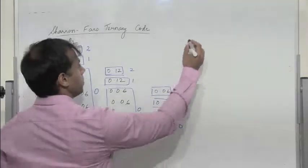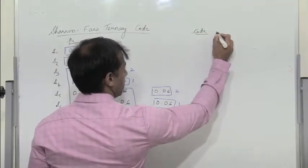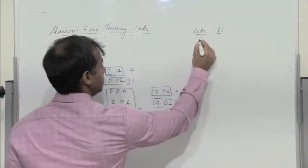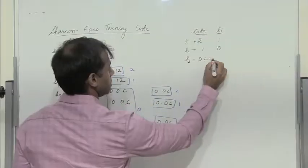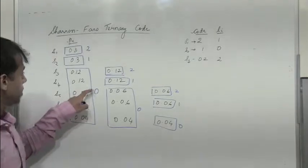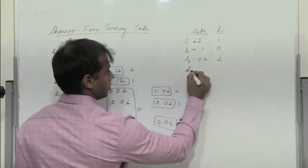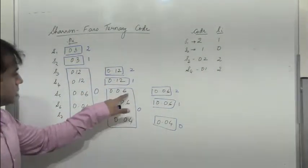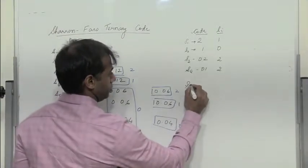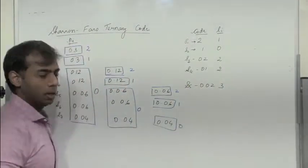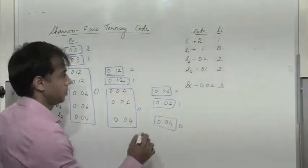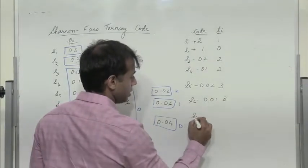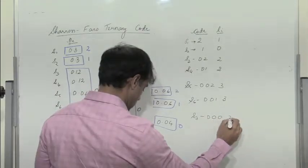So the final codes and code lengths are: S1 has code 2, length 1; S2 has code 1, length 1; S3 has code 0,2, length 2; S4 has code 0,1, length 2; S5 has code 0,0,2, length 3; S6 has code 0,0,1, length 3; and S7 has code 0,0,0, length 3.